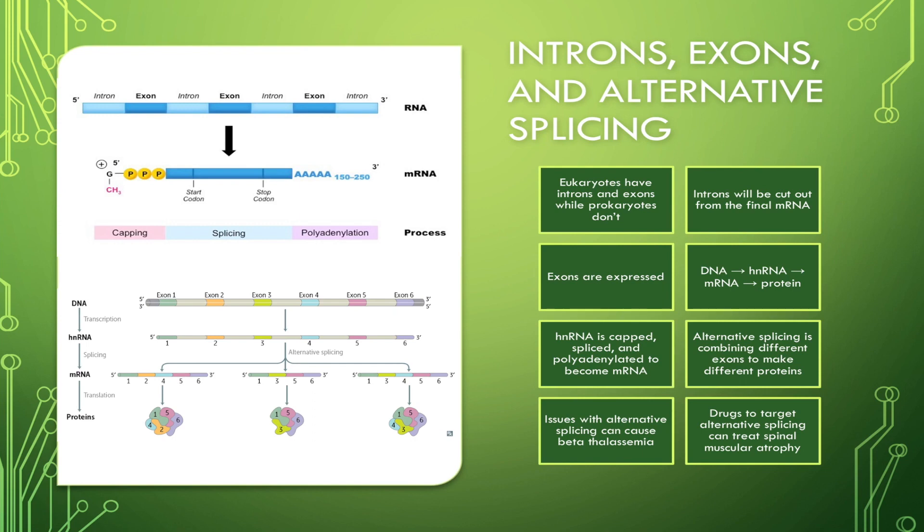In this case, beta thalassemia can occur, which is a blood disorder that reduces the production of hemoglobin, which is the ion containing protein in red blood cells that carries oxygen throughout your body. So people with beta thalassemia have low levels of hemoglobin, and this can lead to a lack of oxygen in many parts of the body.